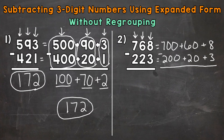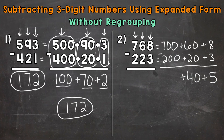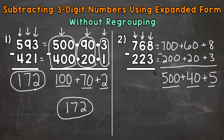Start with the ones: eight minus three gives us a five in the ones. Bring our addition sign down and then move to the tens: 60 minus 20 gives us 40. Bring the next addition sign down and we end with the hundreds: 700 minus 200 gives us 500. So that's our final answer in expanded form. Converting to standard form: a five in the hundreds, a four in the tens, and a five in the ones — so 545.